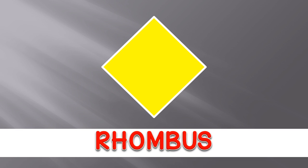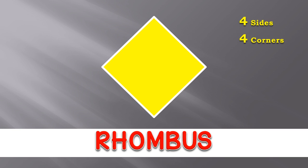Rhombus. It has four sides and four corners. So, these are all about some basic 2D shapes and its properties.